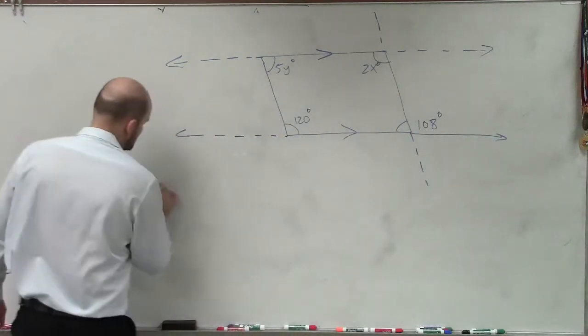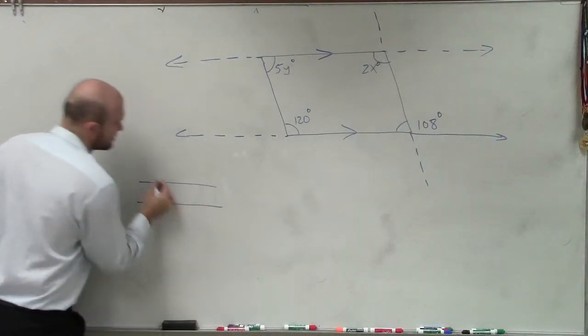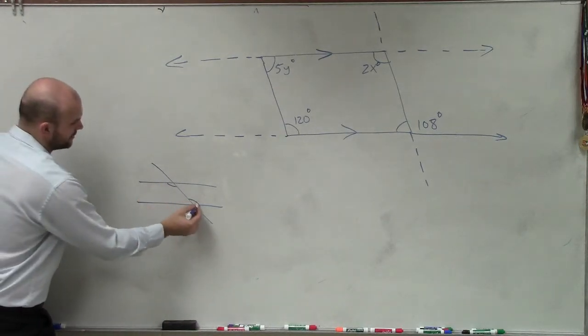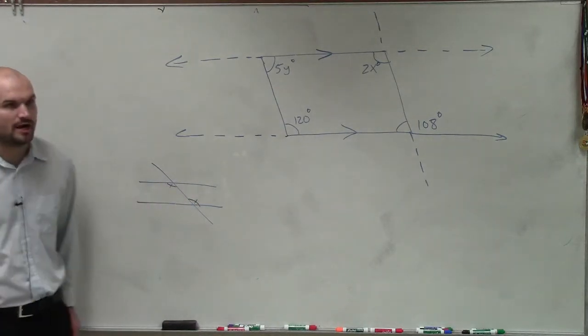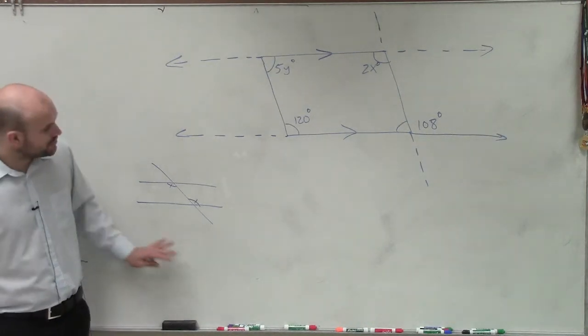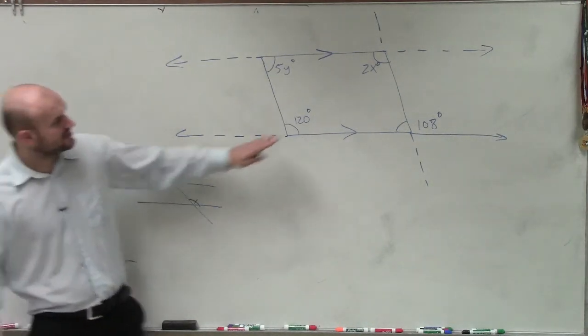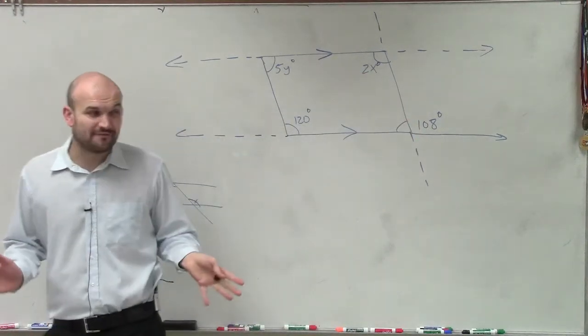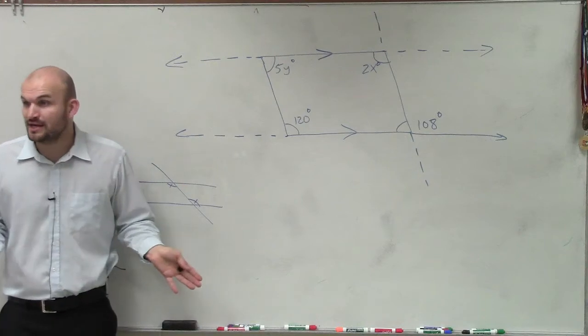So if you guys were to just separately draw parallel lines and a transversal, would everybody agree that that angle and that angle are equal to each other by alternate interior angles? Would everybody agree with me? Would you guys agree with me that the way that that looks is exactly the way that 2x and 108 look? I know it's a little bit different, but it's the exact same thing, right?